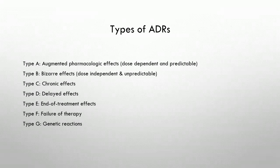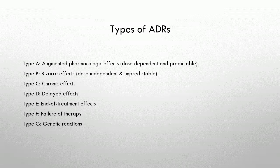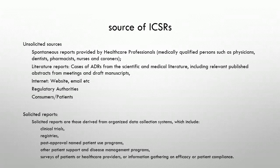Types of ADRs: Type A — Augmented Pharmacologic Effects, dose dependent and predictable. Type B — Bizarre Effects, dose independent and unpredictable. Type C — Chronic Effects. Type D — Delayed Effects. Type E — End of Treatment Effects. Type F — Failure of Therapy. Type G — Genetic Reactions.